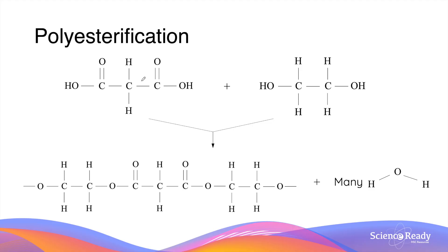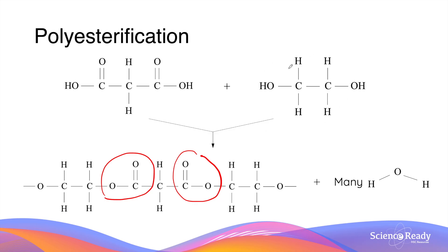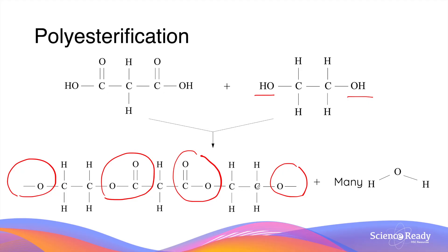Now let's look at polyesterification — the reaction between a dicarboxylic acid and a di-alcohol. The presence of two carboxylic acid groups results in two ester functional groups. By having an alcohol with two alcohol functional groups, the alcohol can further react with the carboxylic acid to lengthen the molecule, resulting in a polymer called a polyester. The production of multiple ester groups also results in many water molecules, as this is a condensation reaction.